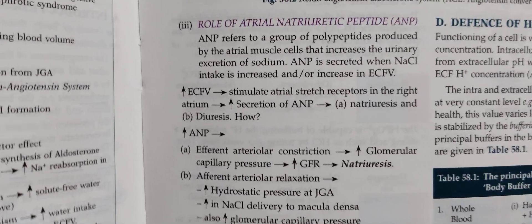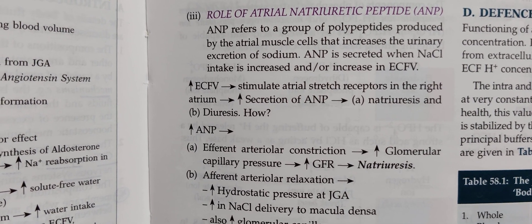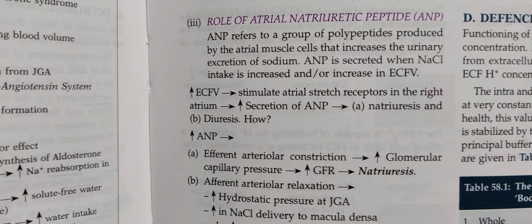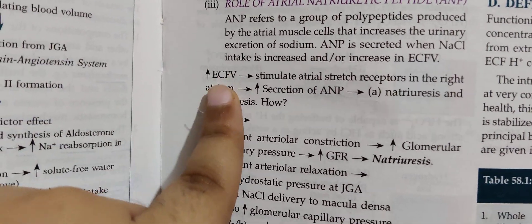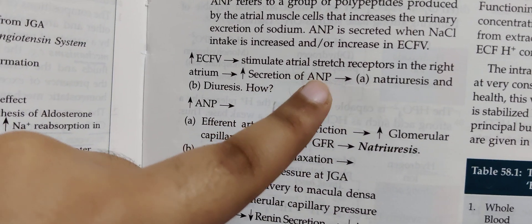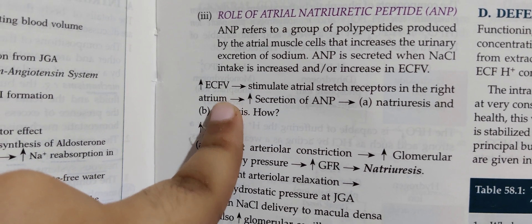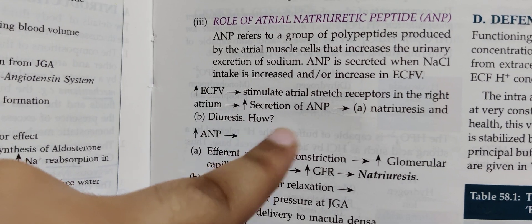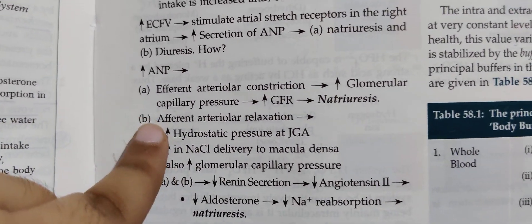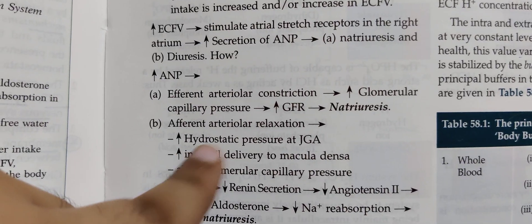The next topic is atrial natriuretic peptide. ANP is a group of polypeptides produced by atrial muscle cells, and its main function is to increase the excretion of sodium. It is secreted when sodium chloride intake is increased or when extracellular fluid volume is increased. When the volume increases, it stimulates atrial stretch receptors, which increases ANP secretion. ANP increases hydrostatic pressure in the glomerular capillaries by causing efferent arteriolar relaxation, leading to an increase in GFR, which leads to natriuresis.